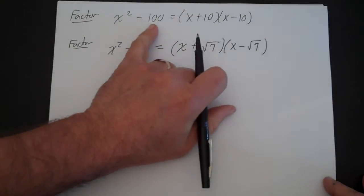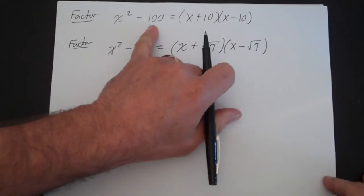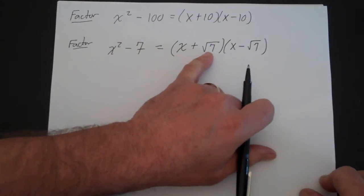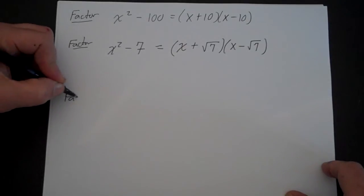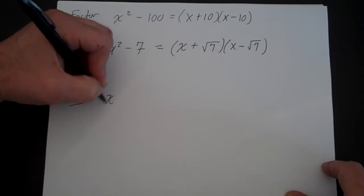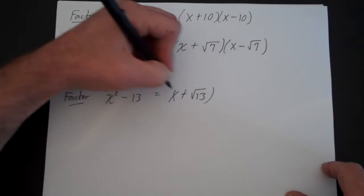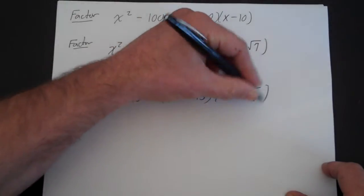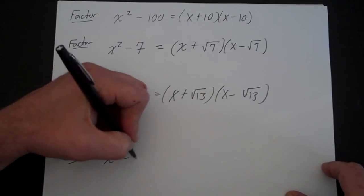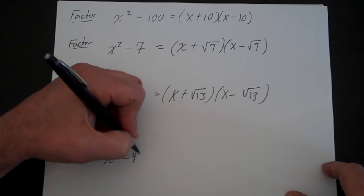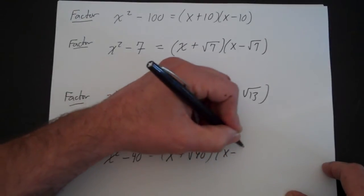The pattern makes sense: for x squared minus 100, we use 10 and 10, which are just the square root of 100. So if it's x squared minus 7, we use square root of 7 and square root of 7. Likewise, x squared minus 13 factors as x plus square root of 13 times x minus square root of 13. And x squared minus 40 factors as x plus square root of 40 times x minus square root of 40.